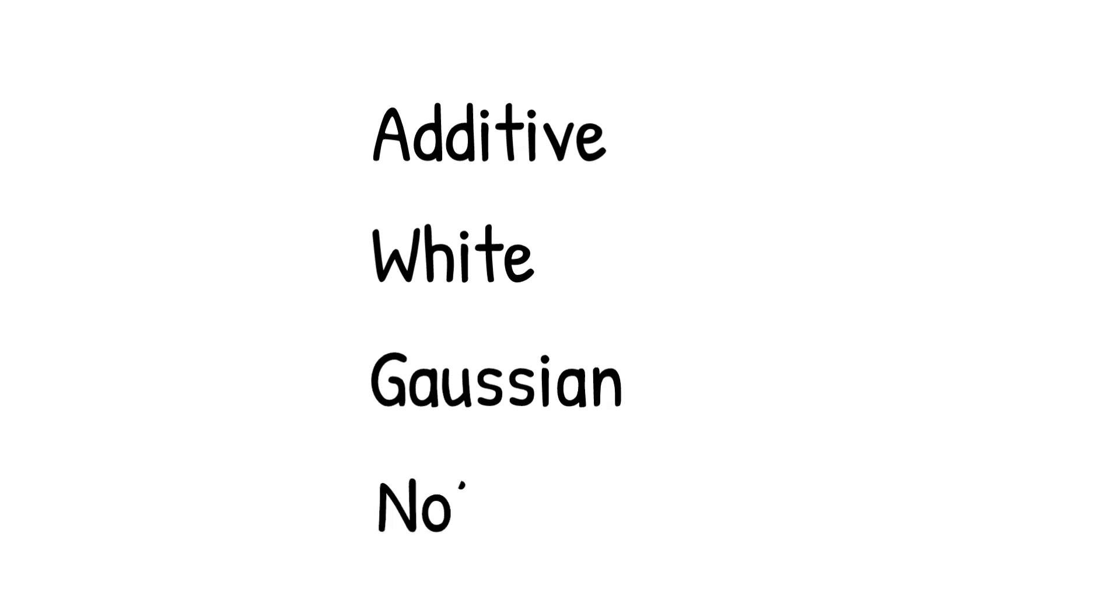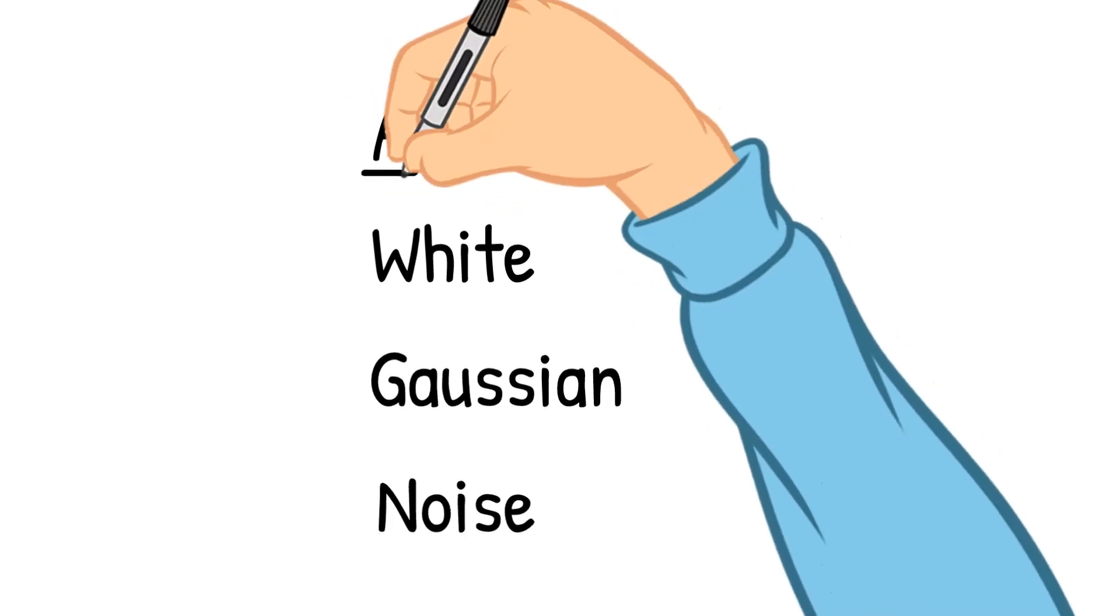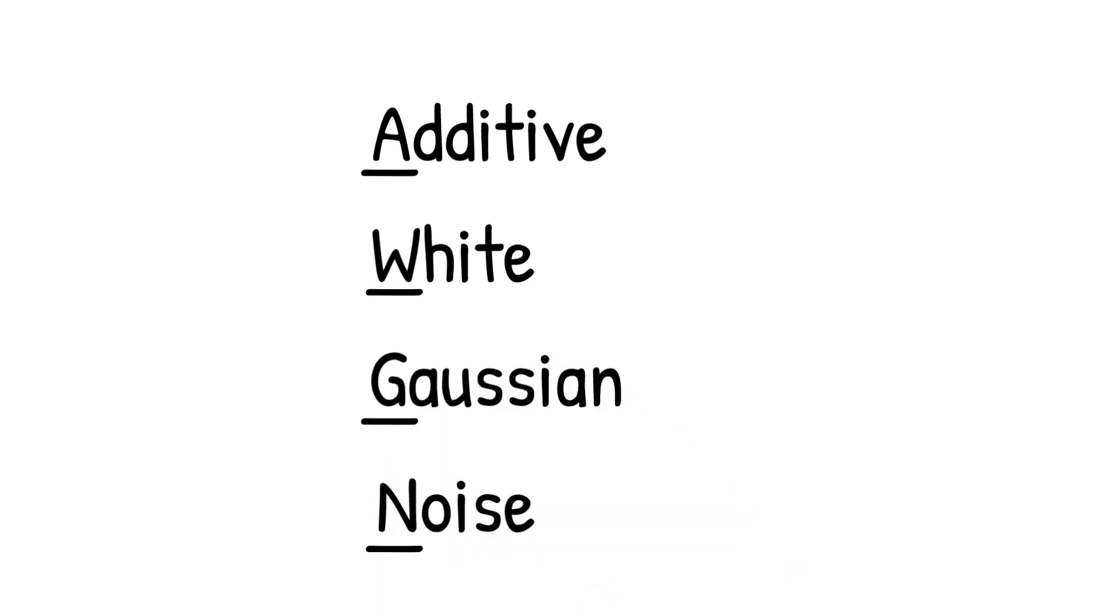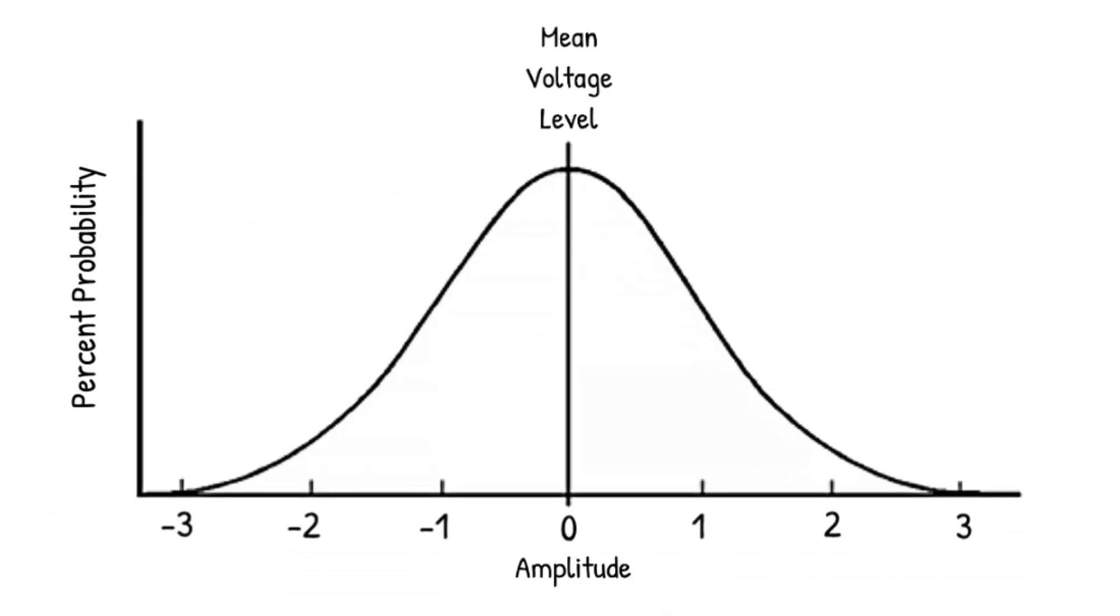These diodes produce additive white Gaussian noise, which is a basic and generally accepted noise model that imitates various random processes observed in nature. An AWGN channel adds randomly generated white noise into a system over a normal distribution.